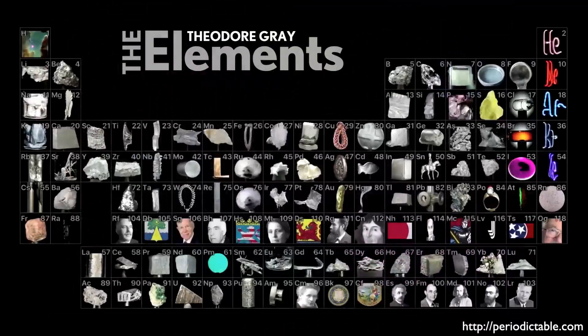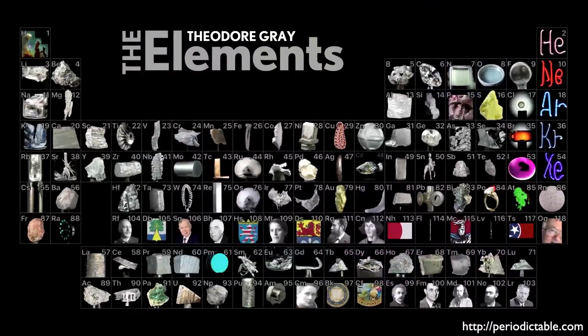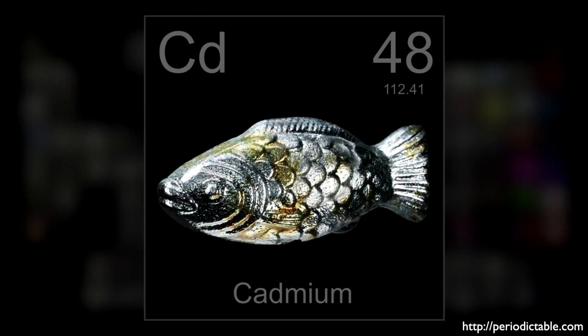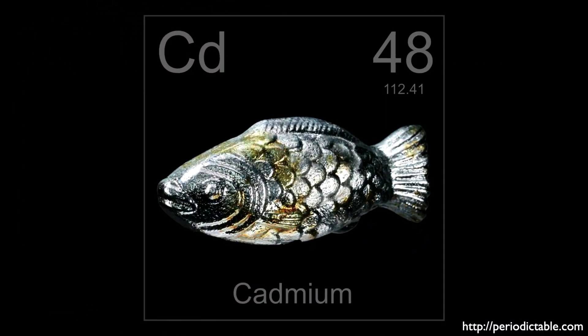Cadmium is the 48th element in the Periodic Table. Its atomic number is 48 because that's how many protons are in its nucleus. The number of protons in a nucleus determines which element we're talking about.